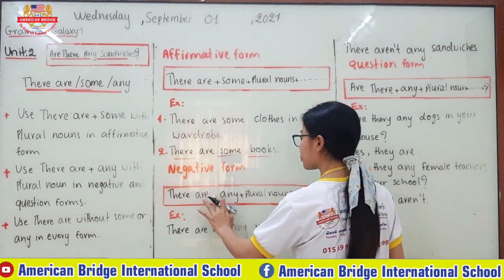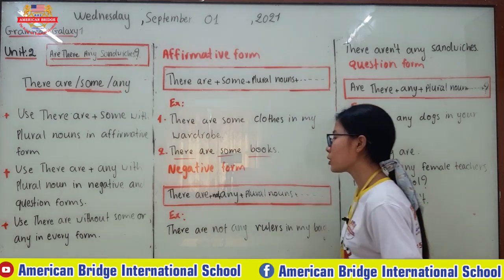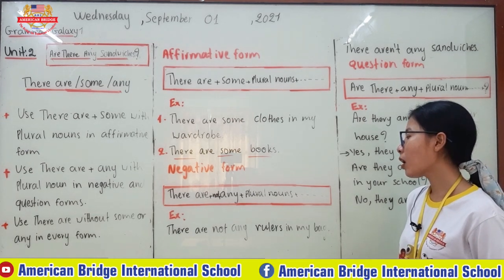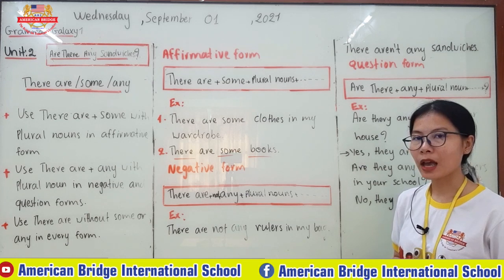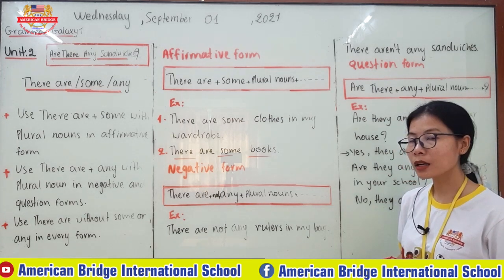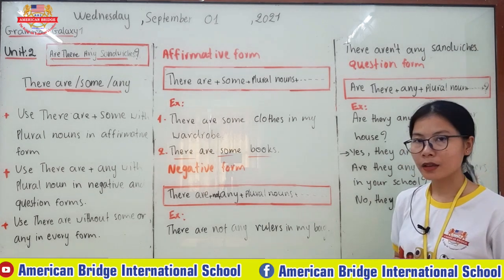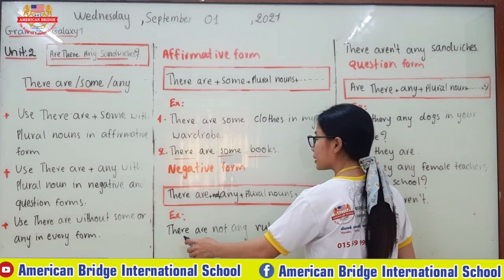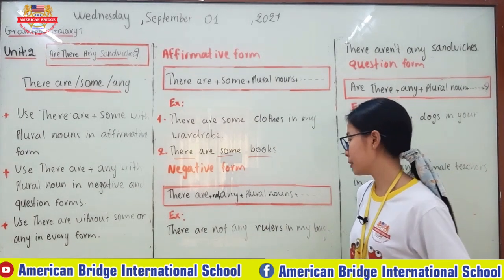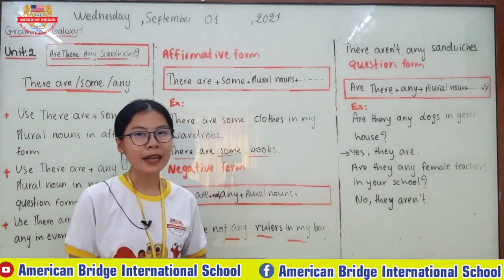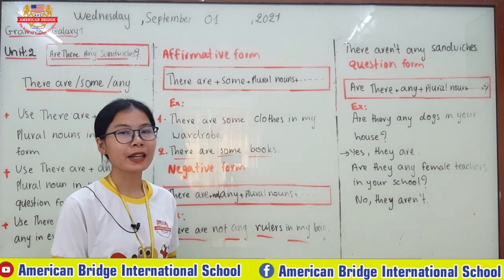Now let's go to the negative form. Negative form: 'there are' plus 'not' plus 'any' plus plural nouns. For example: 'There are not any rulers in my bag.' Remember, 'any' is used with negative and question form only. Whether you use the long form or short form doesn't matter. Here is the long form: 'There are not any rulers in my bag.' And number two, 'There aren't any sandwiches' — you can use the short form 'aren't.'